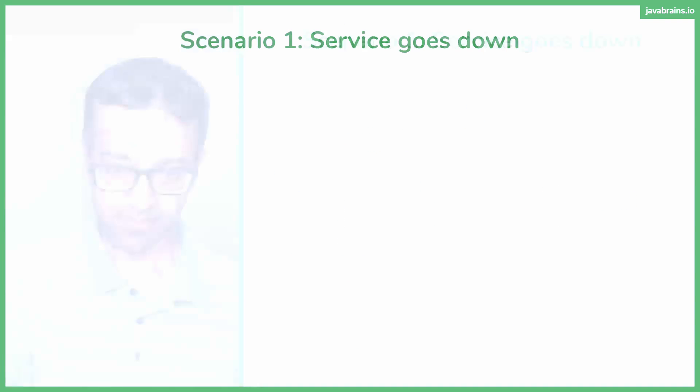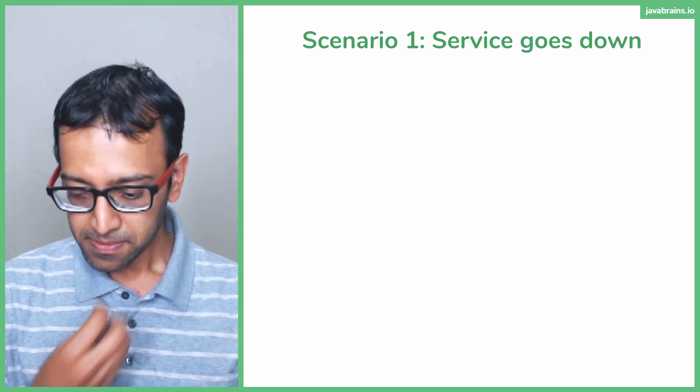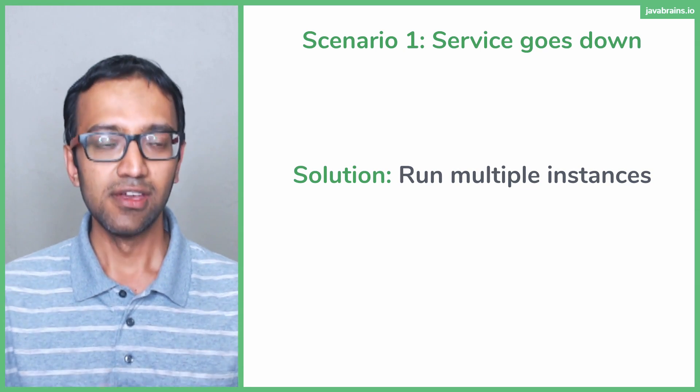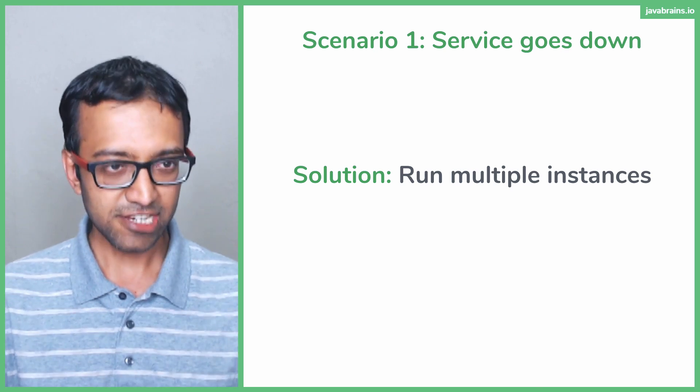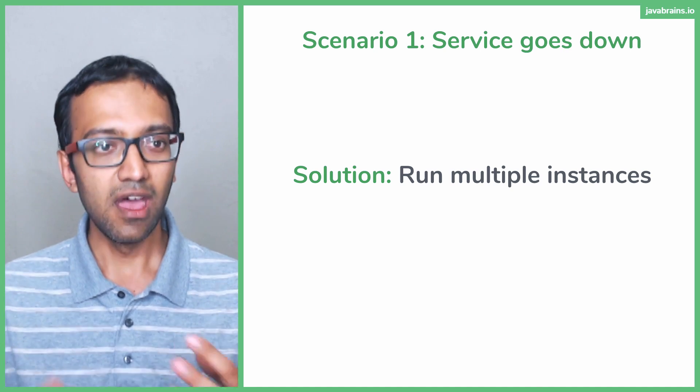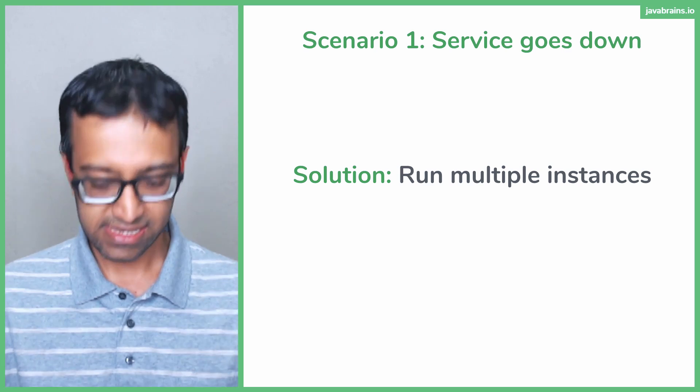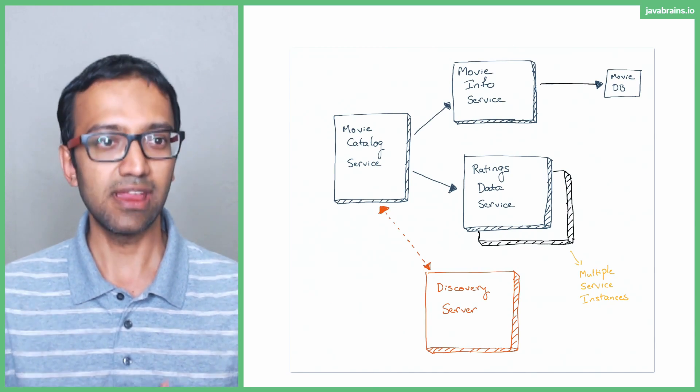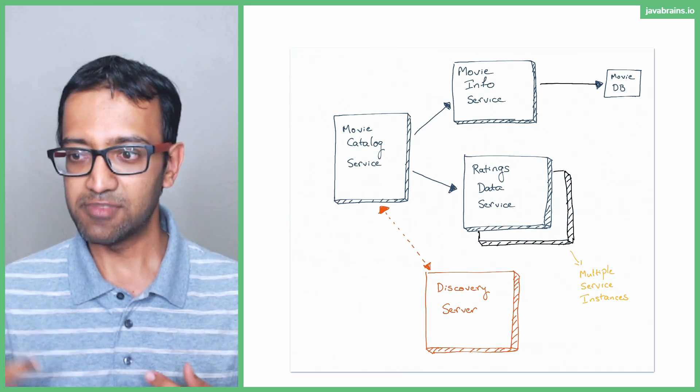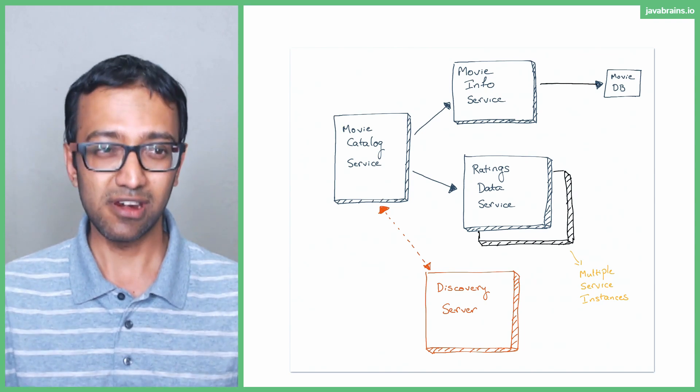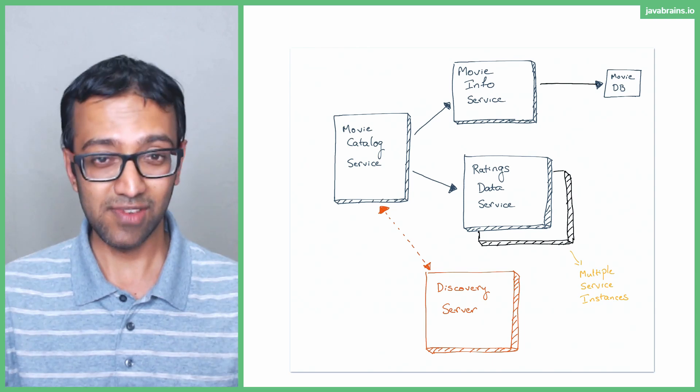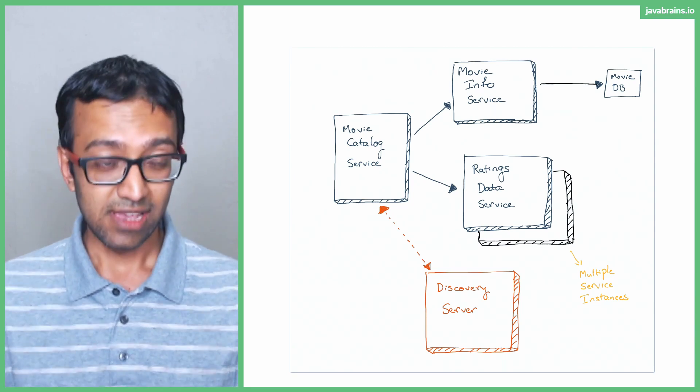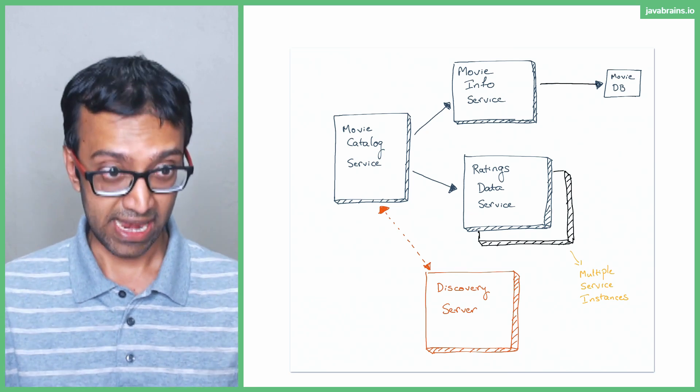The solution should be fairly obvious. You just run multiple instances. So if one service goes down, you don't want the whole application to go down. So one way to solve the problem is create duplicate instances. You can create a bunch more rating data service instances and have them run on different machines, have them run on different ports on the same machine, which is not recommended, but it's a development environment setup. So you can have multiple instances of services running so that even if one were to go down, the others are going to take their place.